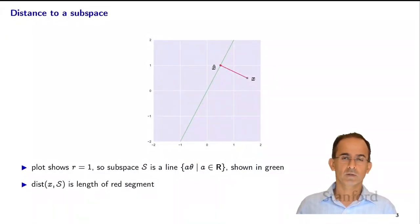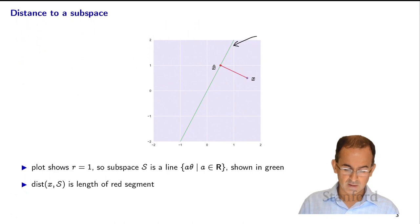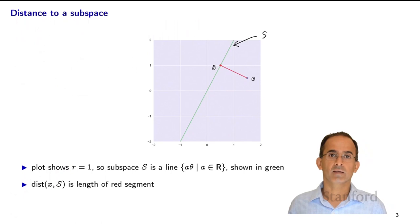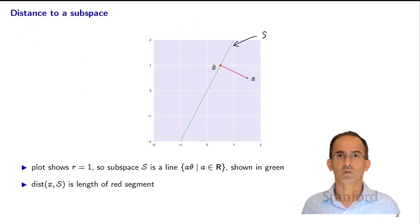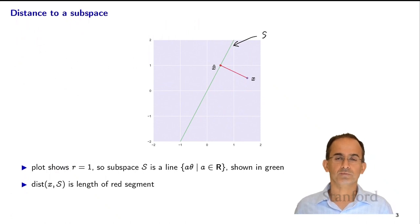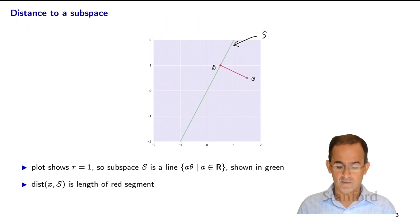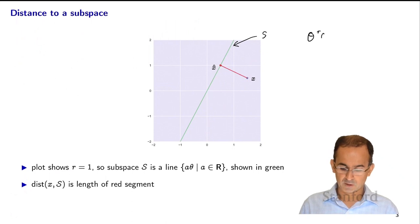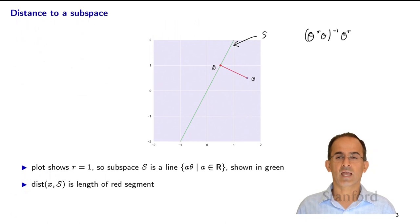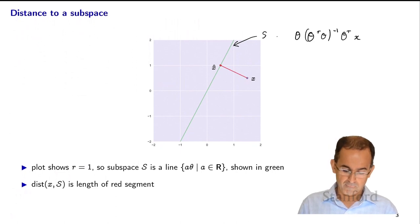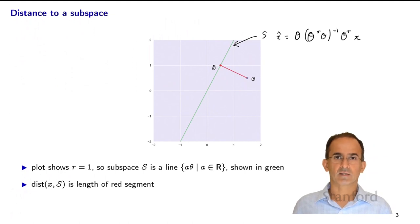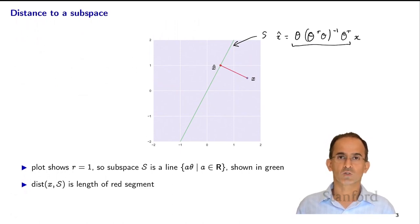Here's the picture for the case when r equals 1 — a one-dimensional subspace, which is just a line. Theta is a matrix with only one column, which we can think of as a vector. Theta^T Theta inverse Theta^T gives us a scalar A, and multiplying by Theta gives x-hat. In this case W will be a 2 by 2 matrix because Theta is a 2 by 1 vector.